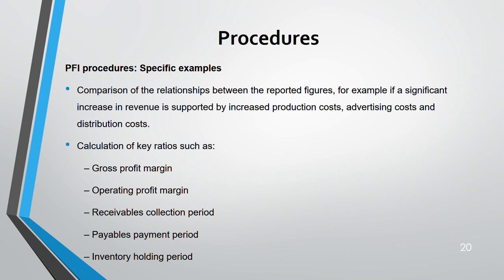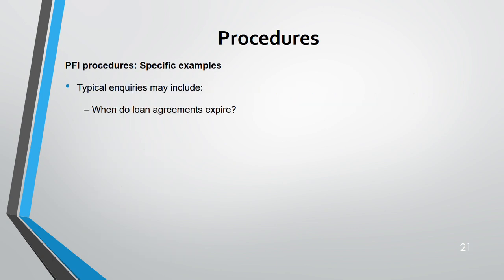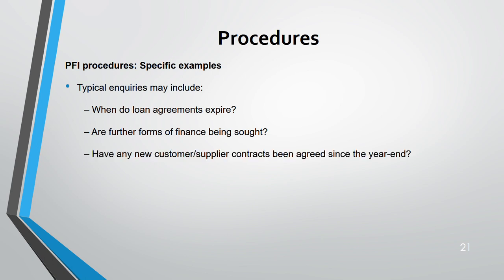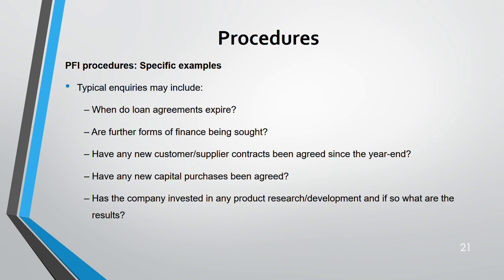Key ratios to calculate include gross profit margin, operating profit margin, receivable collection period, payable payment period, and inventory holding period — similar to review. Inquiries could cover: when loan agreements expire (this reveals interest and cash payment implications); whether further forms of finance are being sought; whether new customer or supply contracts have been agreed; whether new capital purchases have been agreed; whether the company has invested in research and development; and whether there have been new competitors.